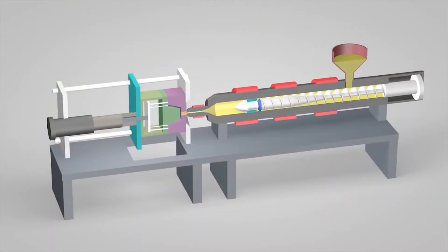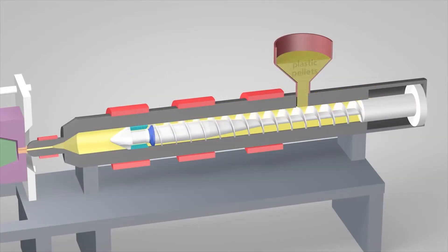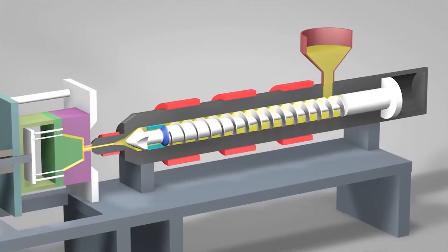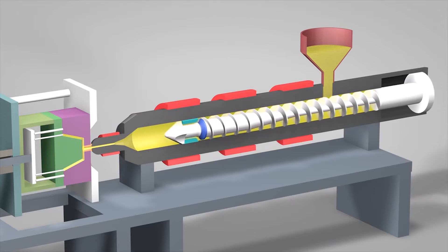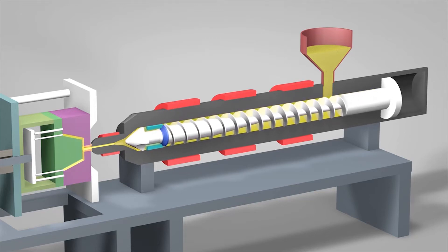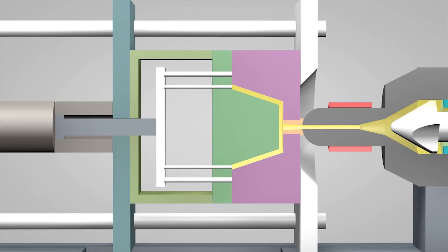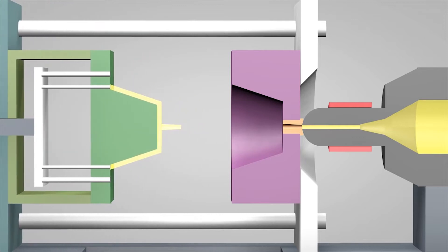An injection molding machine has three main parts: the injection unit, the mold, and the clamp. Plastic pellets in the hopper feed into the barrel of the injection unit. Inside the barrel, a screw transports the pellets forward. Heater bands wrapped around the barrel warm up the plastic pellets. As the pellets are moved forward by the screw, they gradually melt and are entirely molten by the time they reach the front of the barrel. Once enough molten plastic is in front of the screw, it ramps forward like the plunger of a syringe. In a matter of seconds, the screw injects the molten plastic into the empty part of the mold, called the cavity image. The plastic solidifies in under a minute. The mold opens and the part is ejected.